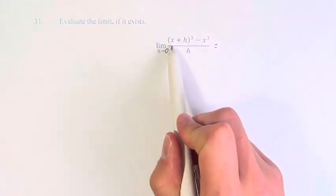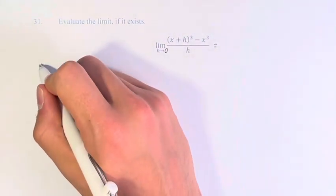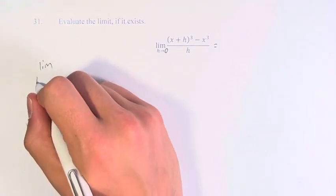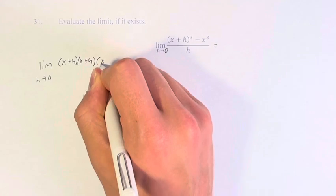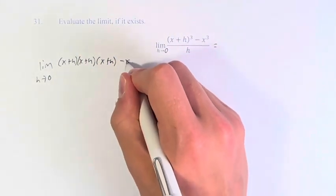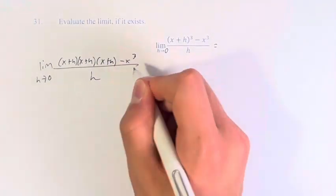So what we have to do is to expand (x + h)³. So what that's going to look like is (x + h)(x + h)(x + h) - x³ over h.